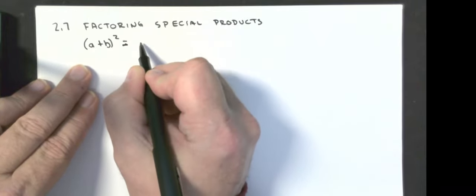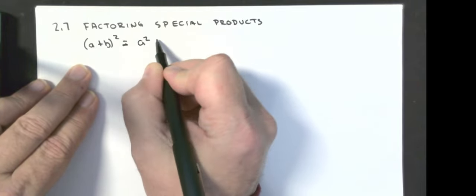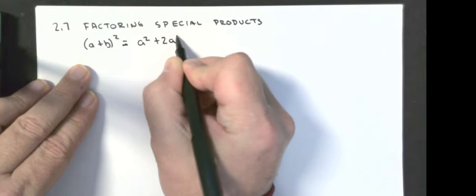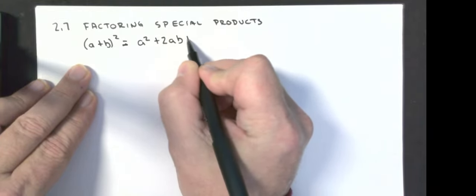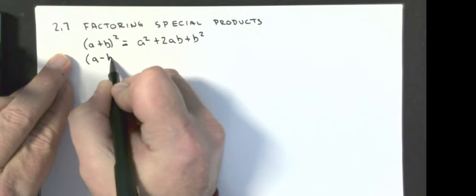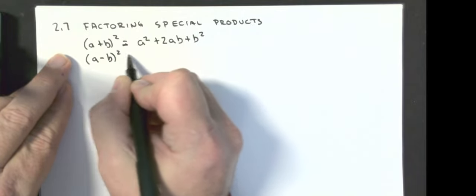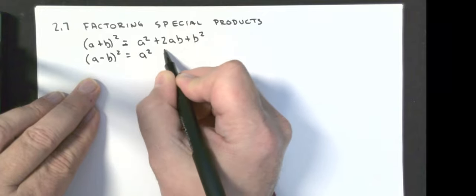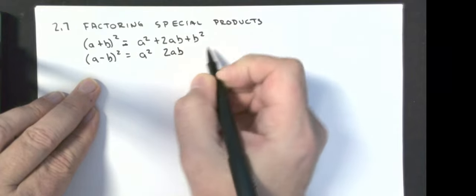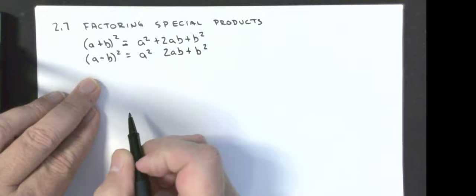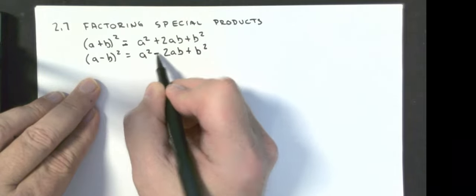Remember that if I were to square (a + b), it would be the first term squared, plus two times the first times the last, plus the last term squared. Same thing — (a minus b) squared would be the first term squared, minus two times the first times the last, plus the last term squared. The last sign is always positive; the middle term copies the sign.